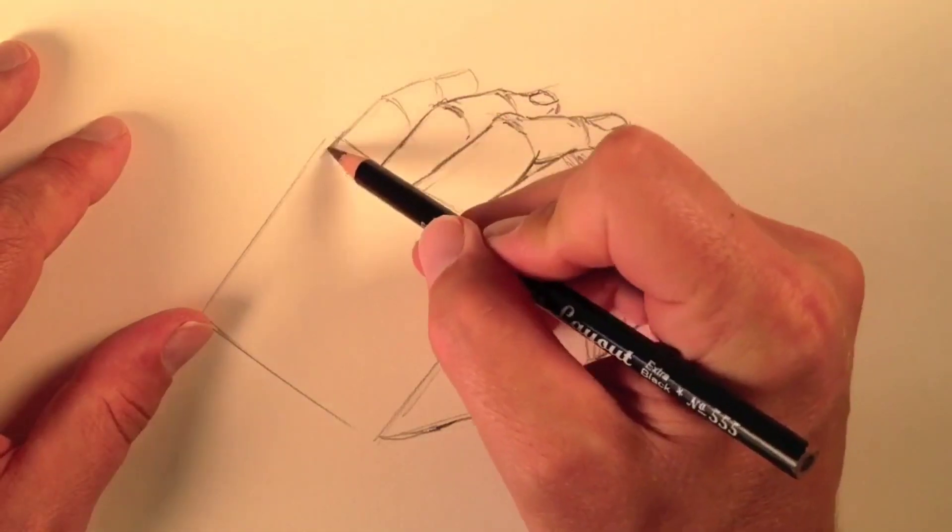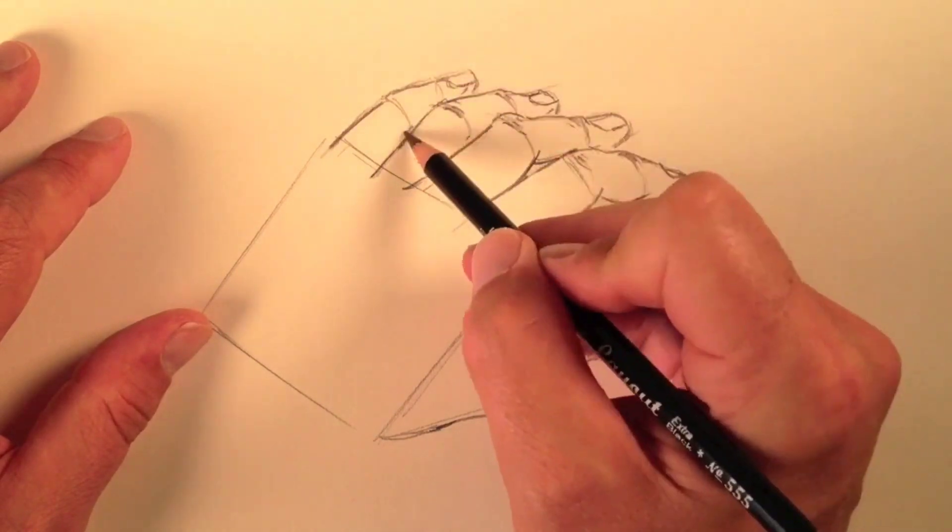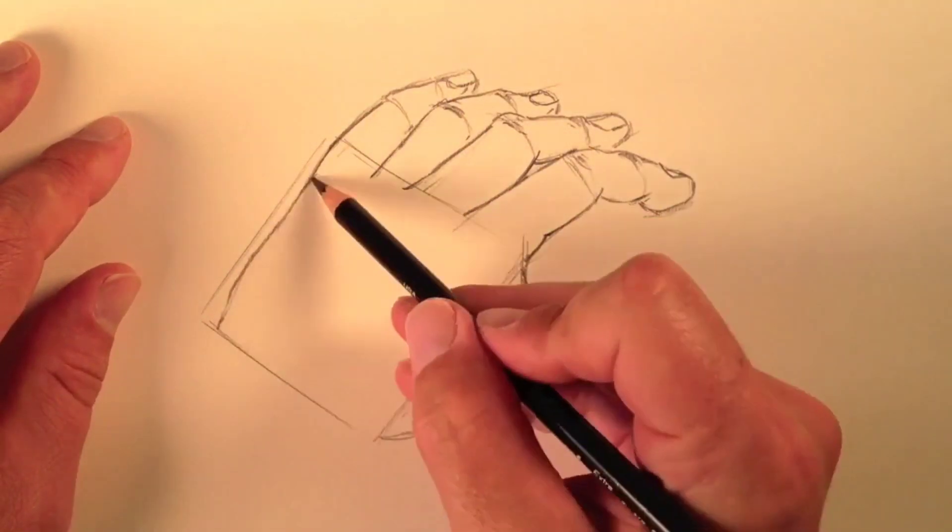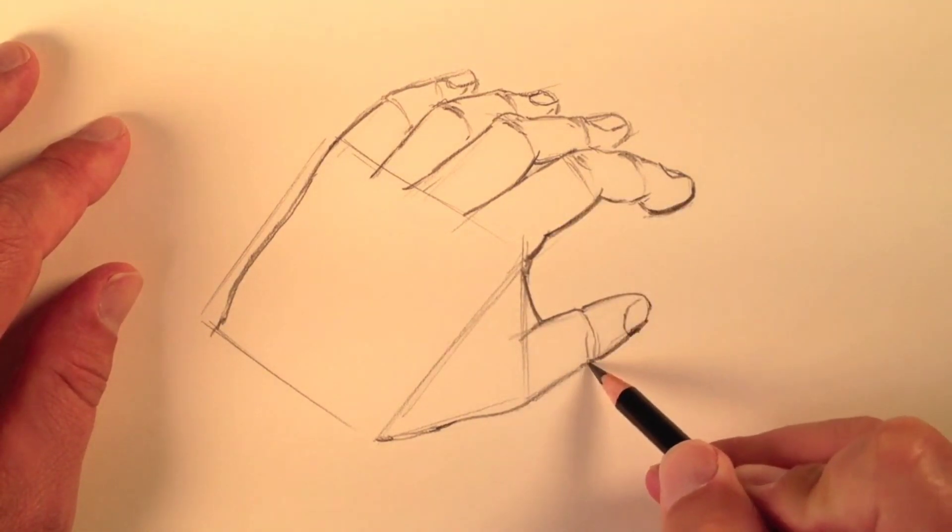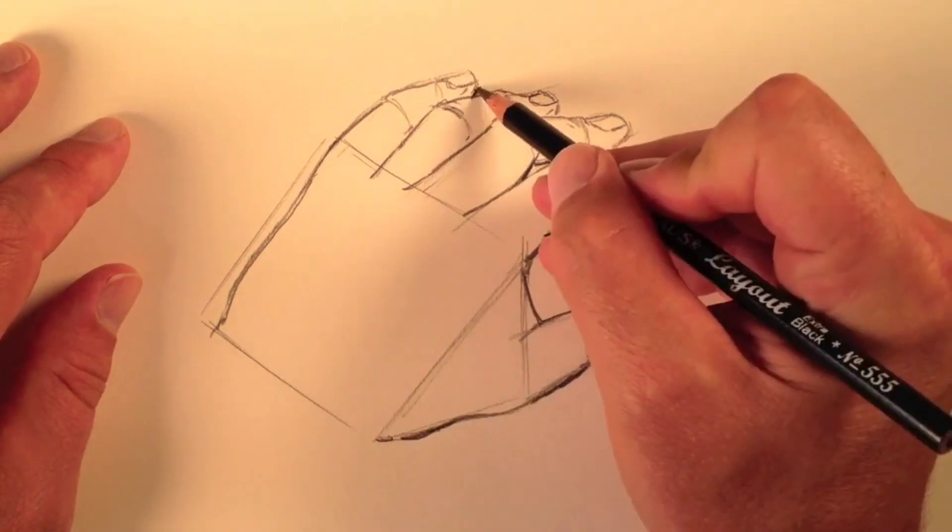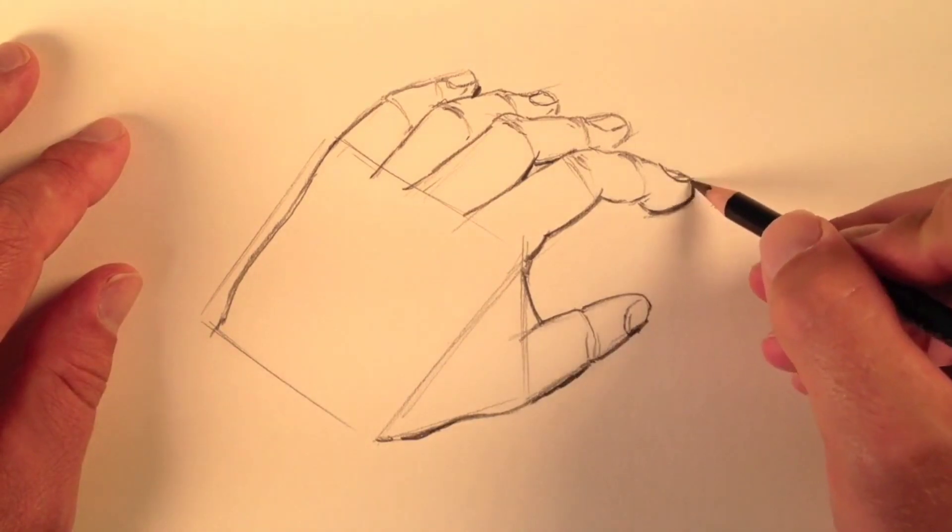So here again, we've taken a subject matter that most people believe is very difficult to draw, and we've simplified it into shapes. I hope that you can see that breaking objects down into shapes will make drawing actually very easy, and you can draw anything.